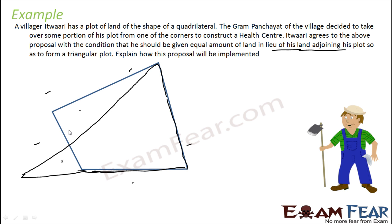But the area has to be the same. If we let this part be A, B, C, D and let E be the new point here — if we get triangle EOA and if we give triangle DOC — the area has to be the same.